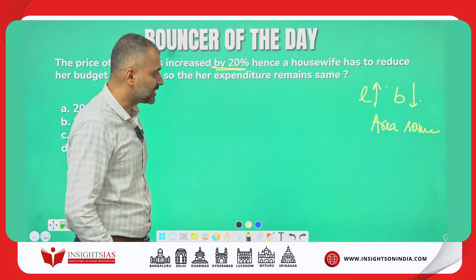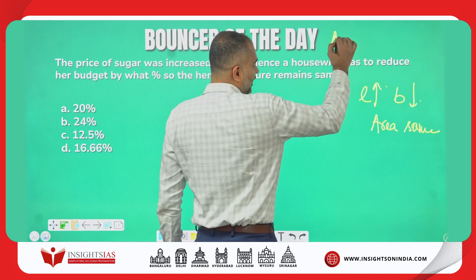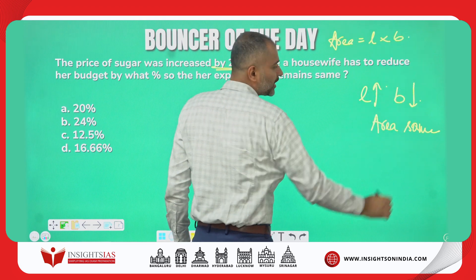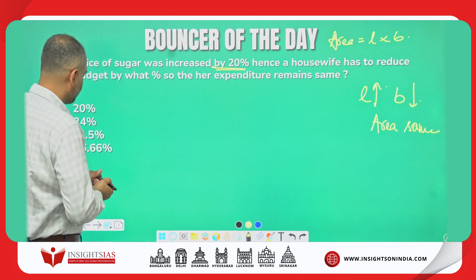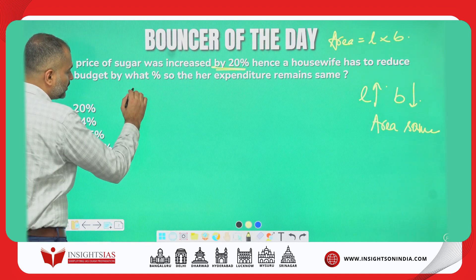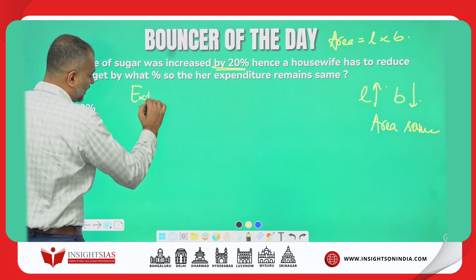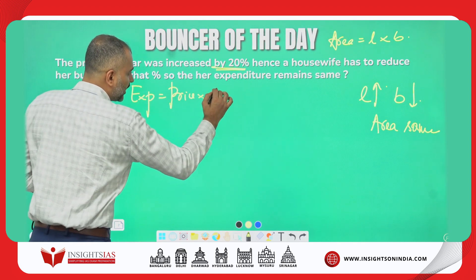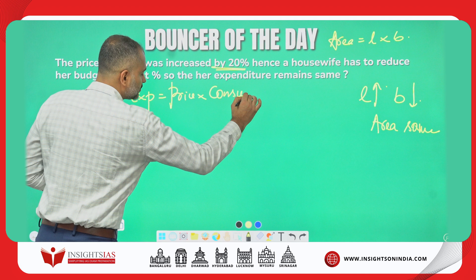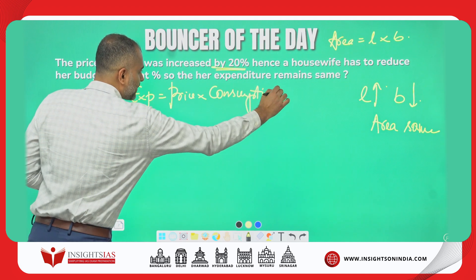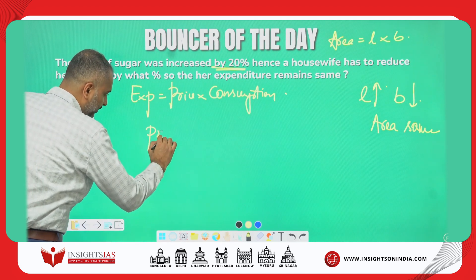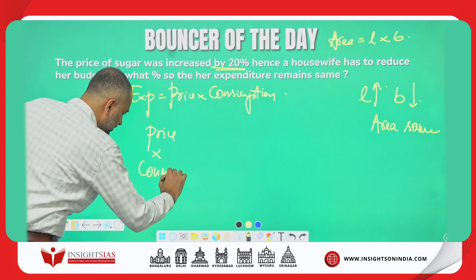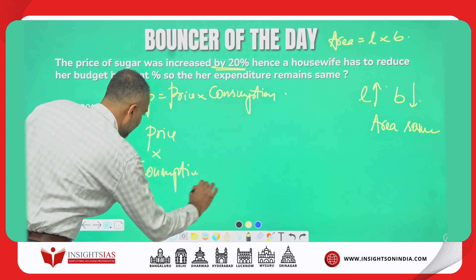Area remains same. In that case, we did: area is equal to length into breadth. But here, expenditure is equal to price into consumption. The price into consumption will lead to expenditure.